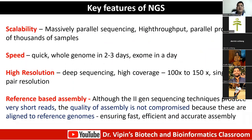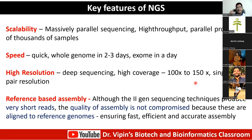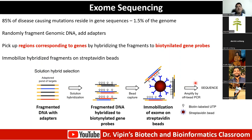Key features of NGS that make it so important: scalability — it is massively parallel sequencing with high-throughput parallel processing of thousands of samples. Speed — whole genome in half a day, exome in a day. The exome is only the expressed part of the genome. This is high-resolution deep sequencing with high coverage at 100 to 150x very routinely possible, with single base-pair resolution. In second-generation sequencing, you use small reads and mostly do a reference-based assembly.